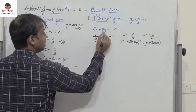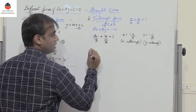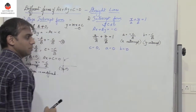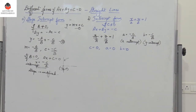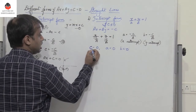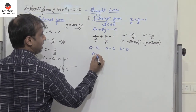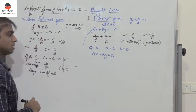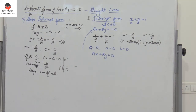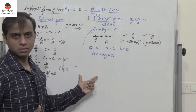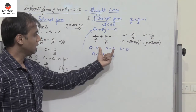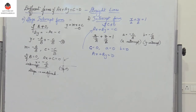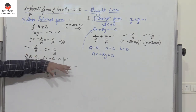This result holds if C is not equal to 0. If C equals 0, then both intercepts become 0. Substituting C equal to 0, we get AX plus BY equal to 0. This is a line through the origin and has 0 intercepts on both axes.